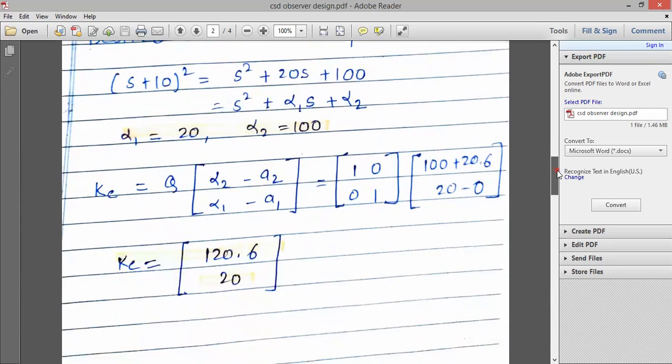Next step is calculate the K matrix. So K matrix is equal to Q into alpha 2 minus A2, alpha 1 minus A1. So we know Q is equal to identity matrix. So we get the K. So these are the K vector, that is the observer vector.